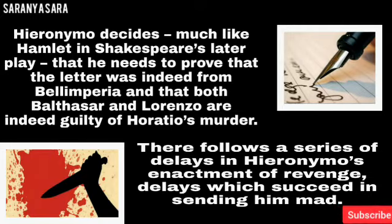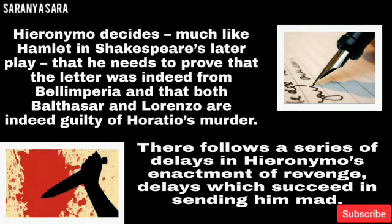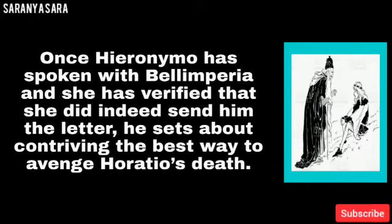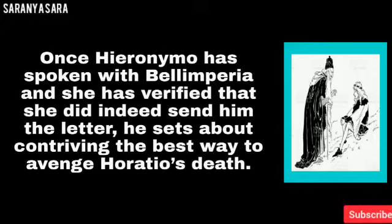There follows a series of delays in Hieronymus's enactment of revenge — delays which succeed in sending him mad. Once Hieronymus has spoken with Belimperia and she has verified that she did indeed send him the letter, he sets about contriving the best way to avenge Horatio's death.